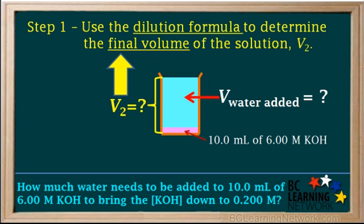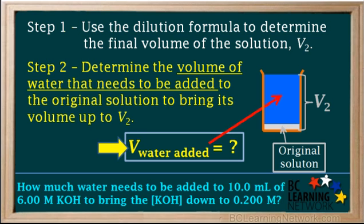We can do this problem in two steps. In step one, we'll use the dilution formula to determine the final volume of the diluted solution, which we'll call V2. And in step two, we'll determine how much water we need to add to the original solution to bring its volume up to the final volume, V2.